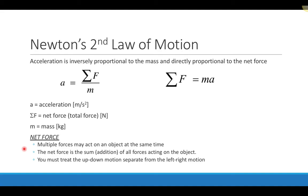We can write down an equation for Newton's second law: acceleration equals net force divided by mass. The mass is on the bottom because acceleration is inversely proportional to mass, and it's directly proportional to the net force — as F gets bigger, acceleration gets bigger; as mass gets bigger, acceleration gets smaller. Acceleration is a vector quantity with both size and direction, and the same is true for force. If you push something to the right, it moves to the right; push to the left, it moves to the left.